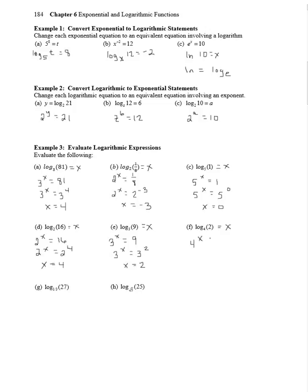Okay, 4 to the x equals 2. 4 is 2 squared, so that's 2x equals 2 to the first, so 2x equals 1, or x equals 1 half.